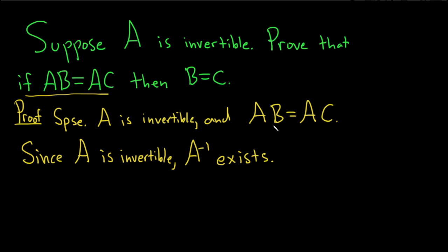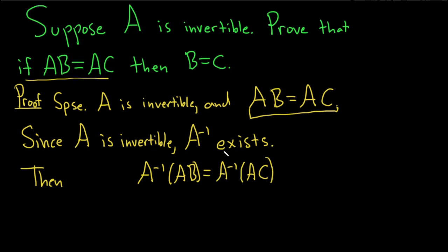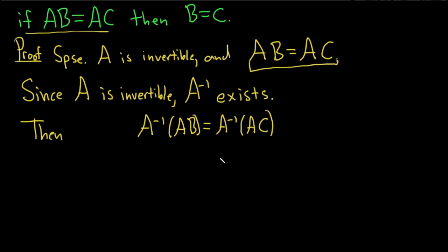And so now what we'll do is we'll basically take this equation here and multiply both sides of this equation by A inverse. So then A inverse, multiplying on the left, times AB is equal to A inverse, multiplying on the right, times AC. So we have to multiply on the same side. Remember matrix multiplication is not necessarily commutative.